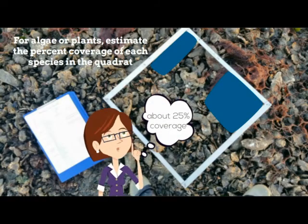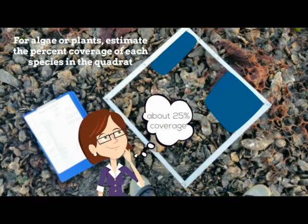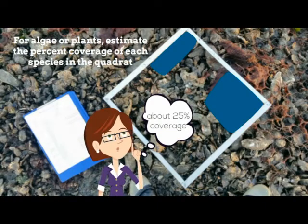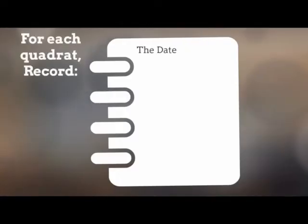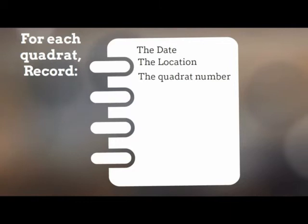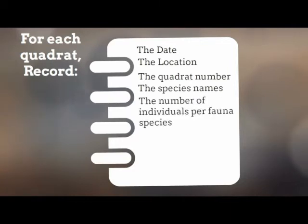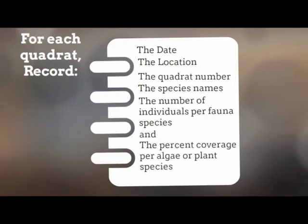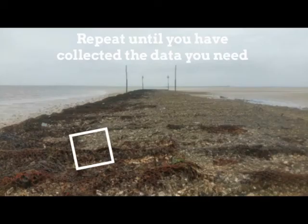Step 4: For each quadrat, record the date, the location, the quadrat number, the species names, the number of individuals per fauna species, and the percent coverage per algae or plant species. Repeat until you have collected the data you need.